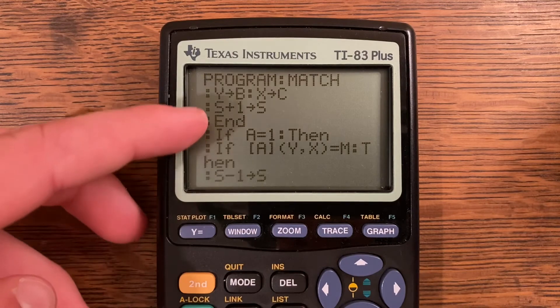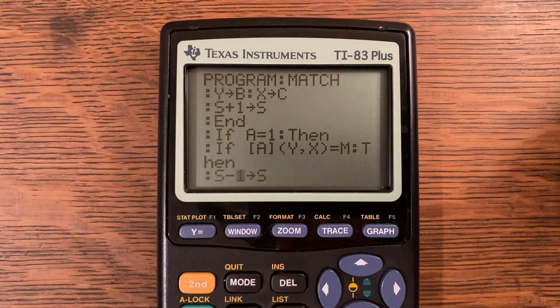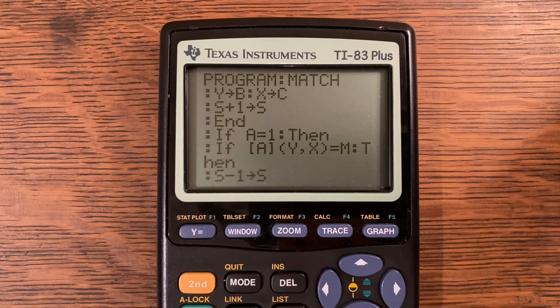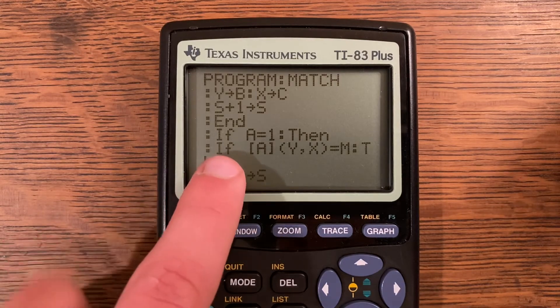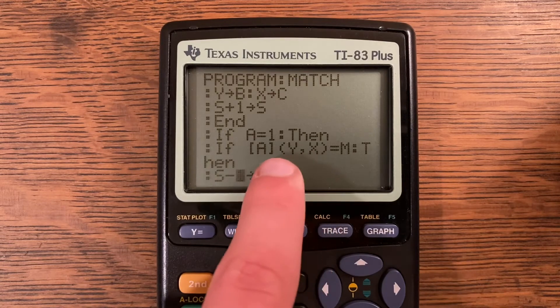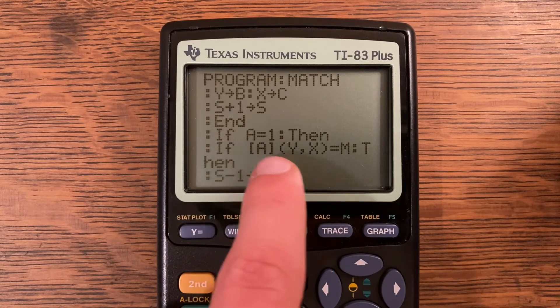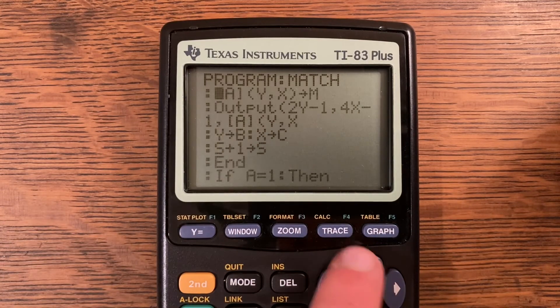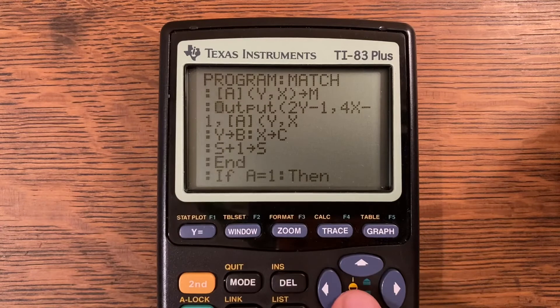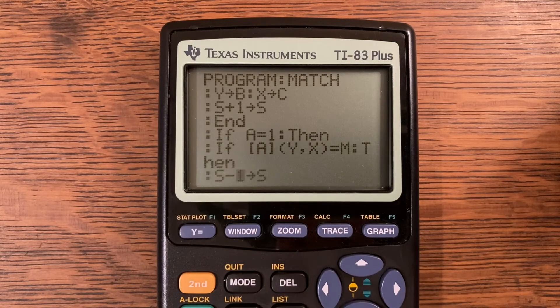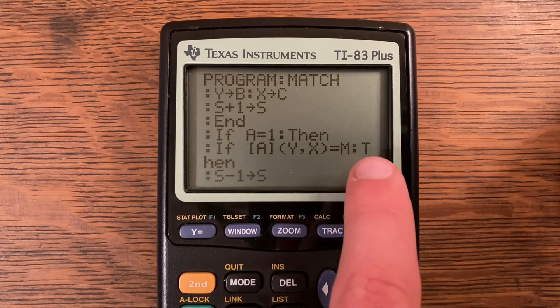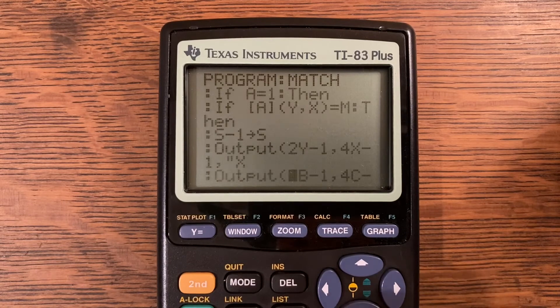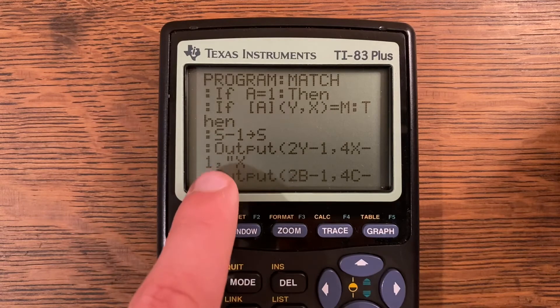If A is equal to 1, if you are on your second move, there's two conditions: you could either have it right or you could have it wrong. So then I set up the if it's right condition. If your current position in matrix A, so matrix A at Y comma X is equal to whatever you guessed last time, because M was stored right here from your previous position. That's just an easy way to know what their previous position was. Then S minus 1 store into S, so you get a bonus point if you get it right. Output 2Y minus 1 comma 4X minus 1 comma quote an X, and that is also your previous position B and C.